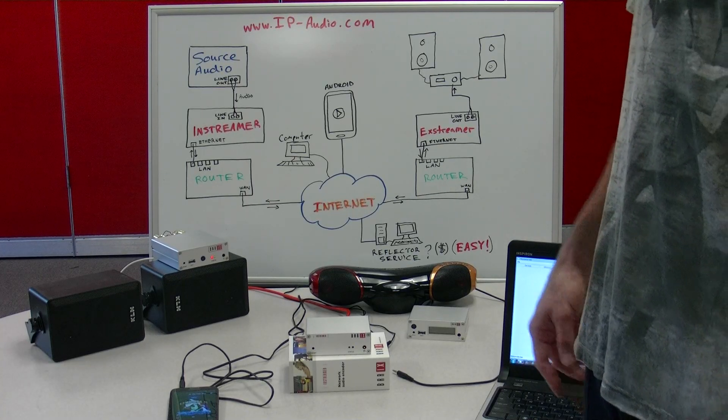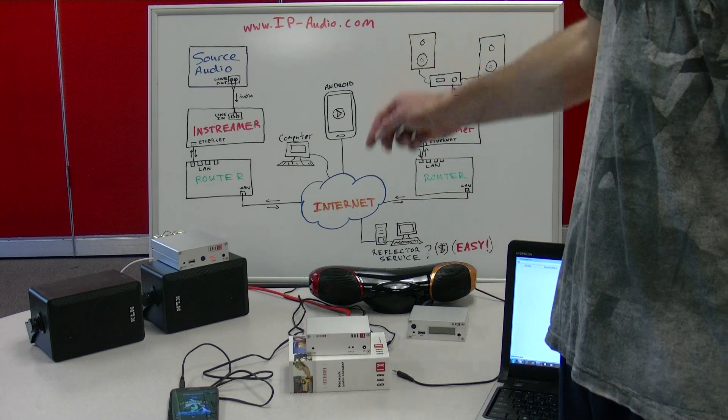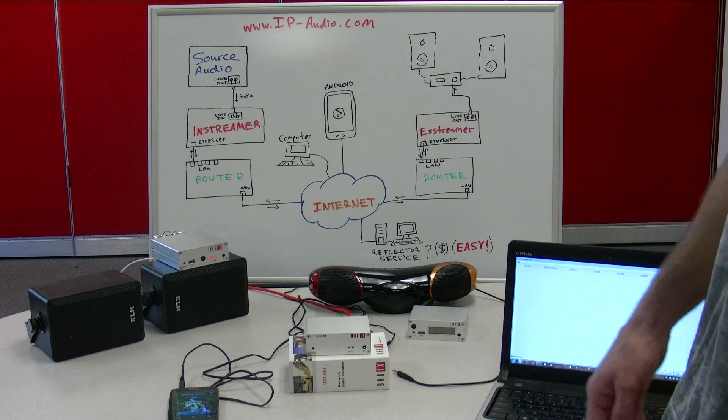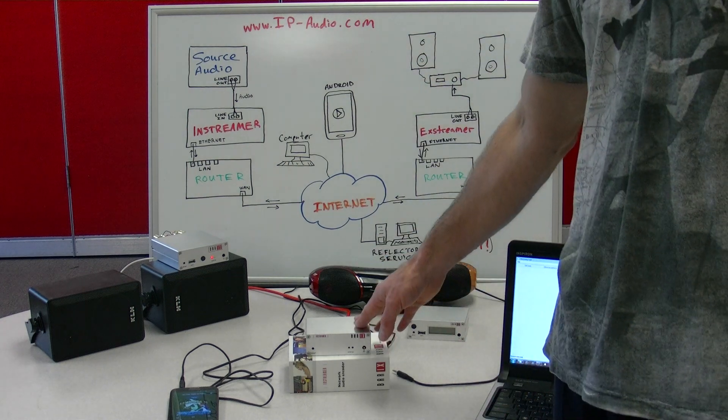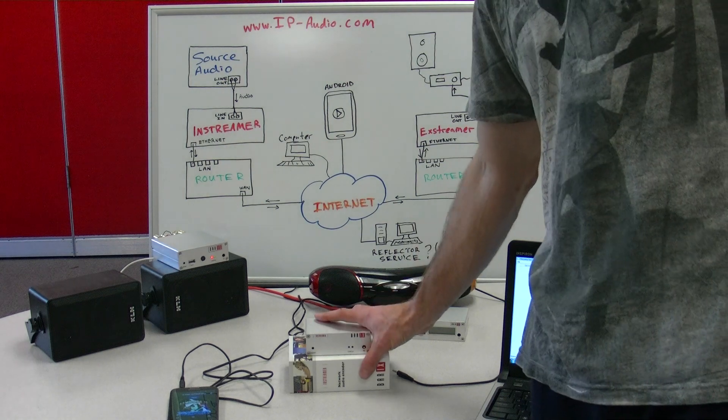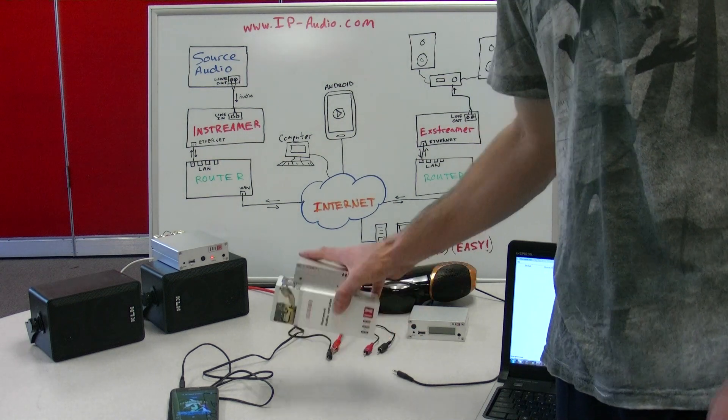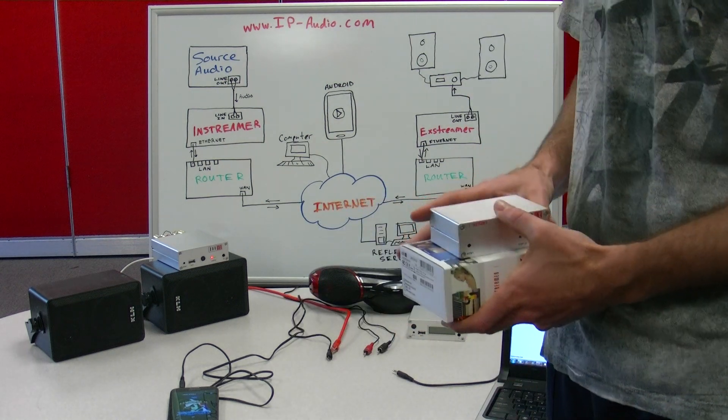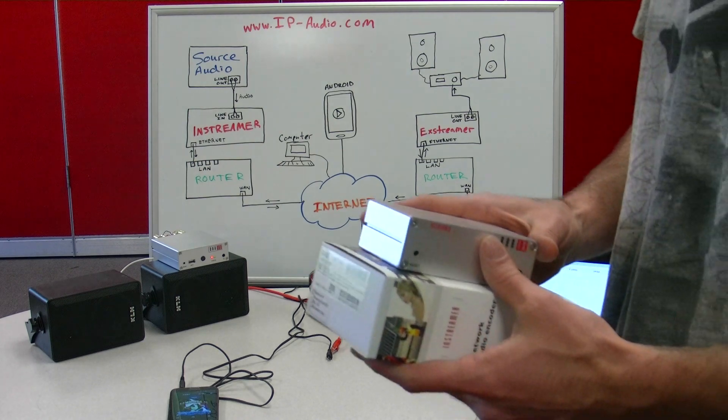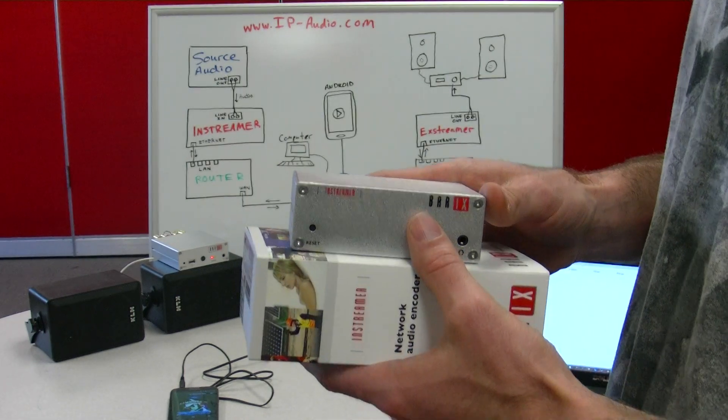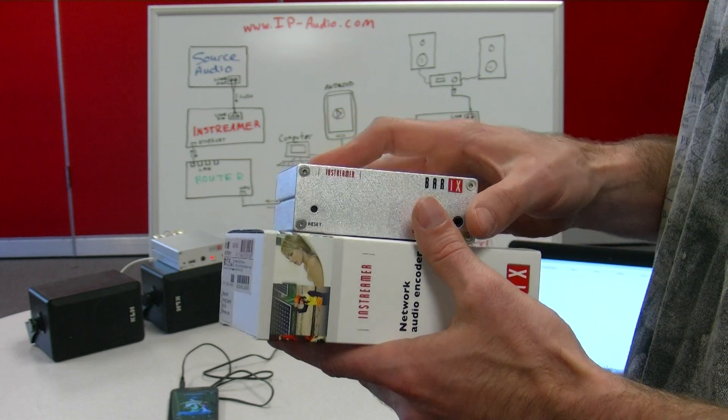Hi, my name is Adam. I'm with ip-audio.com and today we're going to be taking a look at the In-Streamer product from Barix. The Barix In-Streamer is an IP audio encoder, so it can take an analog audio stream and encode it to MP3 or PCM or G711 and stream it out over IP networks.